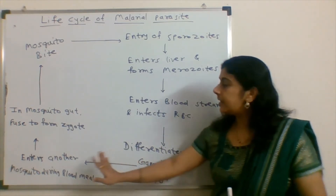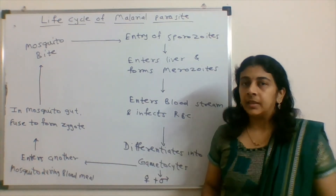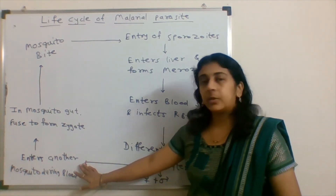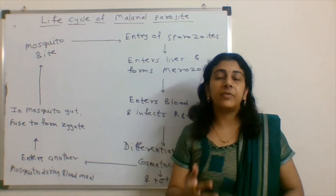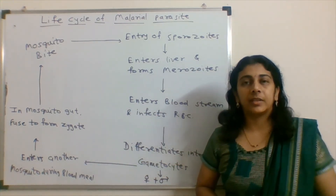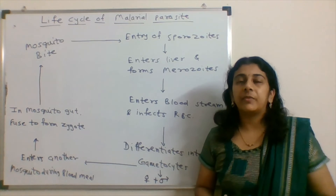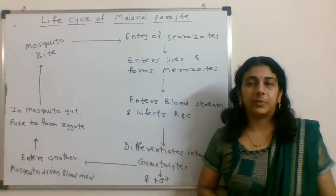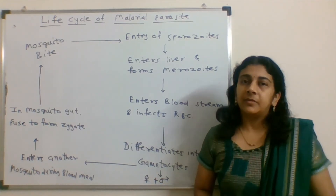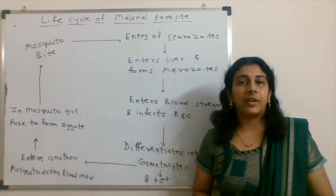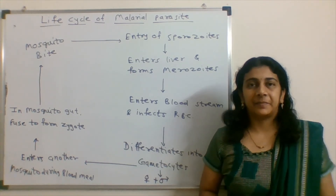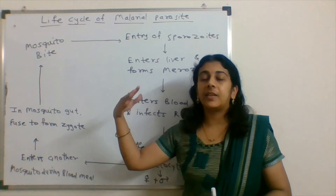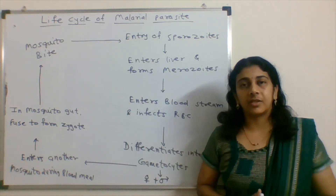If the infected person gets another mosquito bite, these gametes enter the mosquito. In the gut of the mosquito, the gametes fuse to form a zygote. This zygote differentiates and develops into the salivary gland of the mosquito, further forming sporozoites within the salivary gland. Now this mosquito is ready to carry another infection.